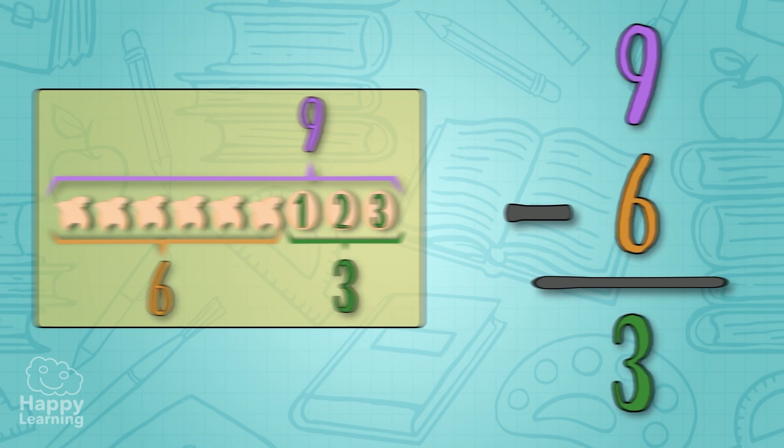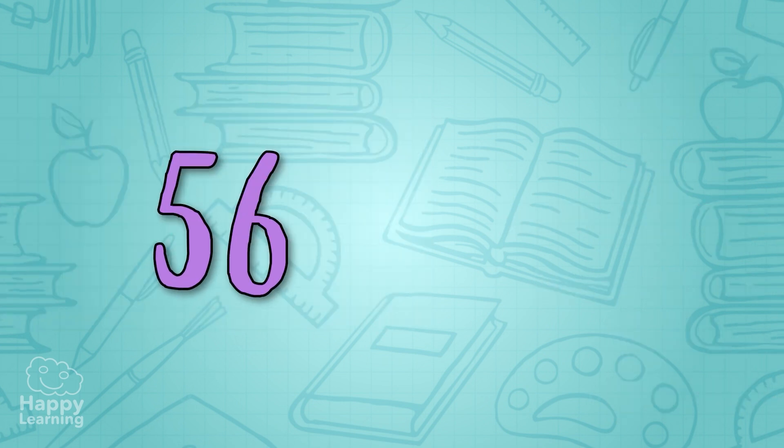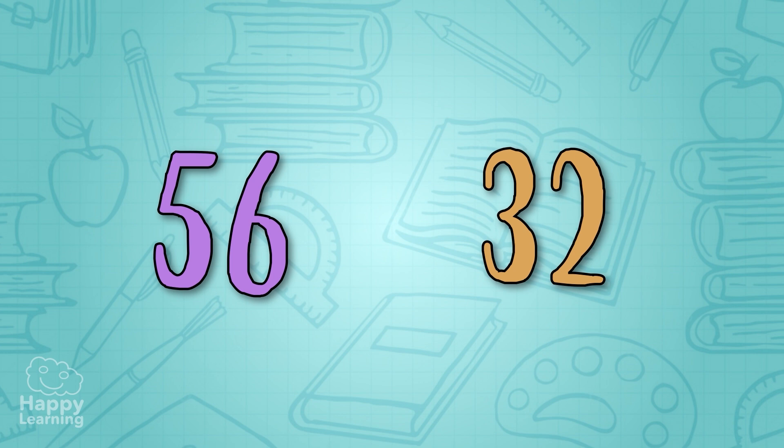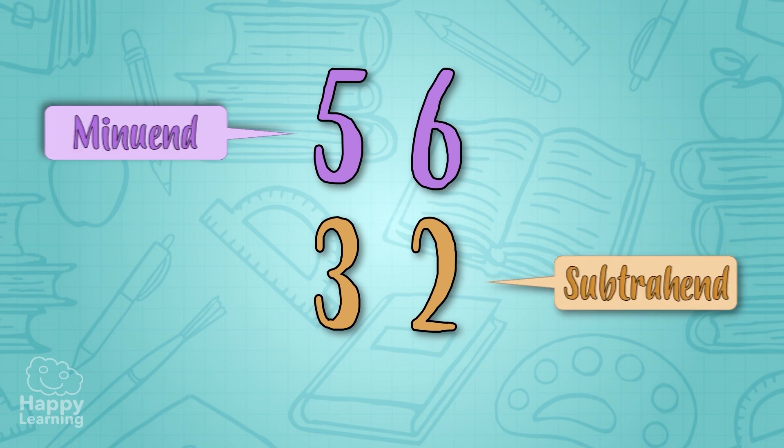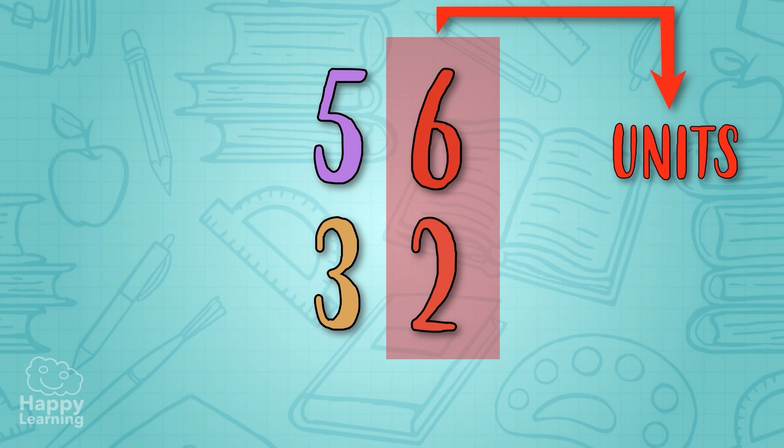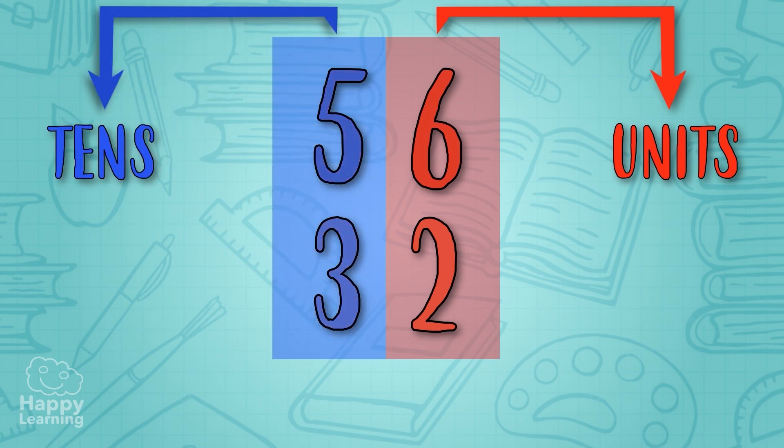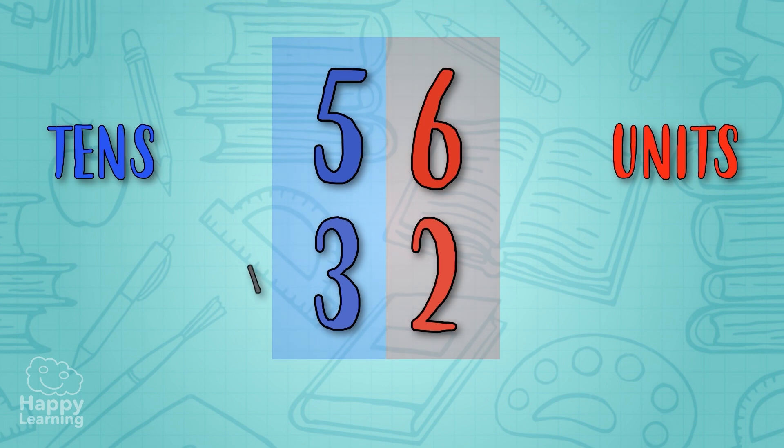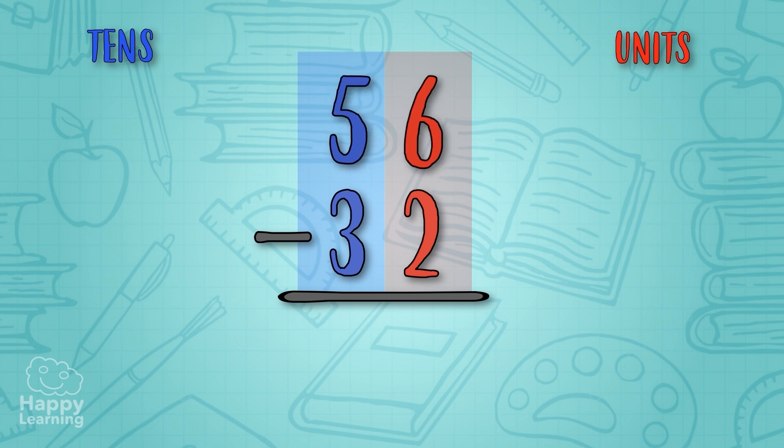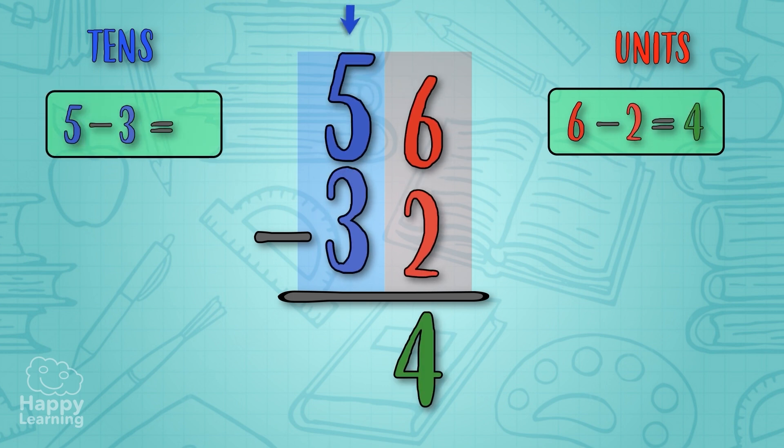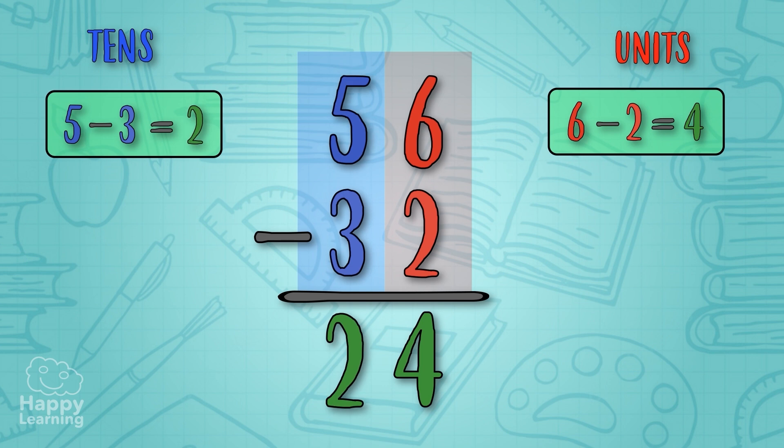But now we're going to complicate things a little more. To subtract larger figures, for example 56 minus 32, we need to write down the minuend 56 and under it the subtrahend 32, always placing units under units and tens under tens. After this we place the minus sign and we're ready to subtract. 56 minus 32 is equal to: six minus two equals four and five minus three is equal to two. That means that the final result is 24. Easy peasy, huh?